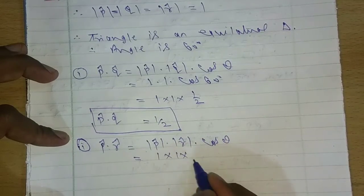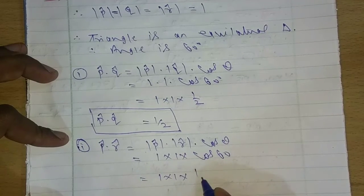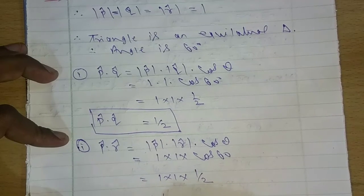1 times cos 60. So 1 times 1 times cos 60. So 1 times 1 times a half, which is half, which is also again half.